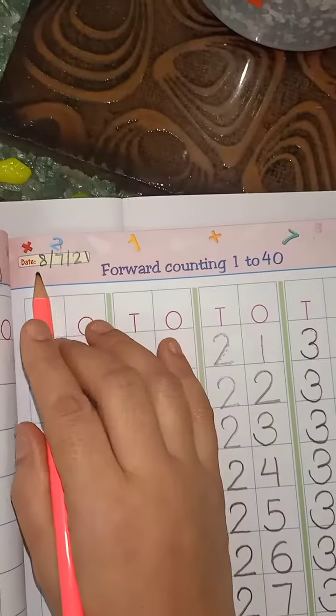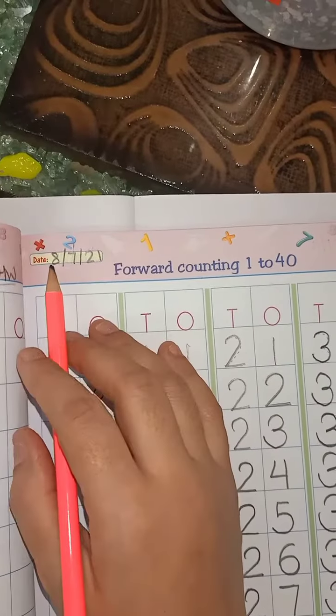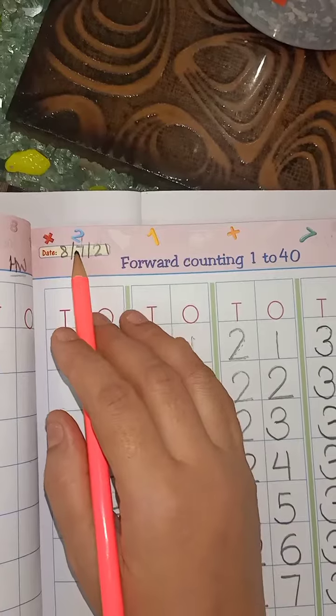So bachche, first of all, write down the date here. So, which date is today? 8th, write down 8, slanting line.